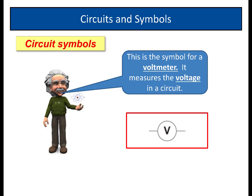Similarly, a simple one is the symbol for a voltmeter, a circle with a V in it. And this measures the voltage, or what we call potential difference, in a circuit.